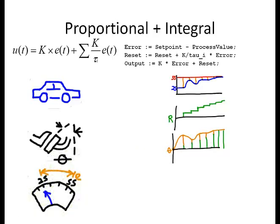You may be wondering why you need proportional at all if the integral component will get you to the set point. Sometimes you don't. If you want a very slow steady rise to a set point change, an integral only controller can be acceptable. But for a controller that you want to quickly get moving in the right direction, the proportional kick for a large error can be very beneficial. Because of this, most controllers in industry are PI controllers.